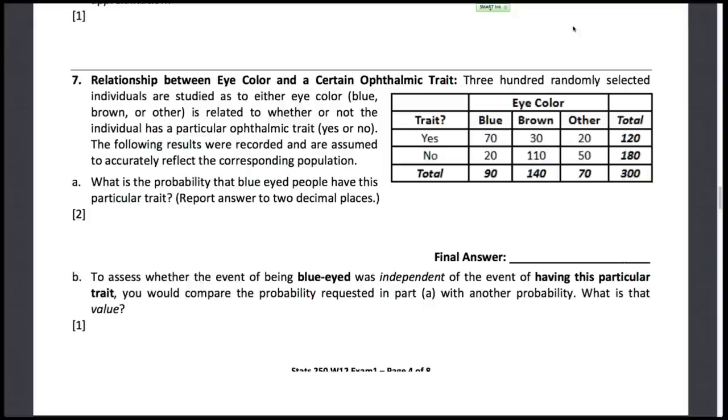So what is the probability that blue eyed people have this particular trait? So it's the probability that someone has a trait here given that we know that they're a blue eyed person. So we're only going to look at this part of the table here, just those who are blue eyed.